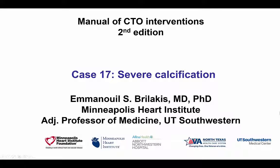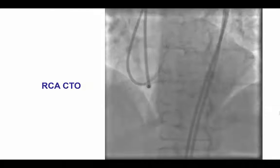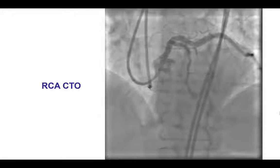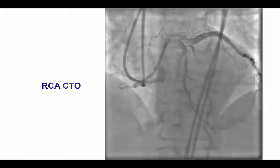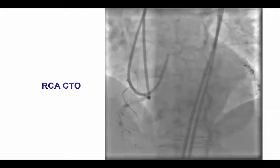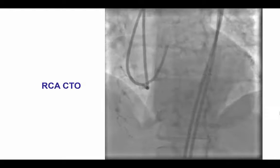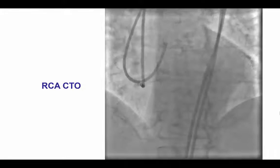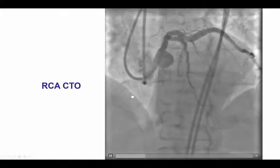This is Manos Brilakis from the Minneapolis Heart Institute presenting case 17 for the second edition of the Manual of CTO Interventions. This is a case of severe calcification. The patient was an elderly woman who had severe angina with single vessel disease and a calcified CTO of the mid-right coronary artery.